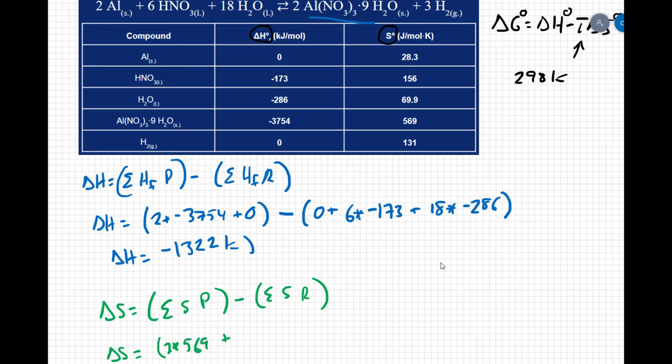Alright so those are my products minus my reactants so I have 2 aluminums 2 times 28.3 plus 6 hydrogen nitrates so 6 times 156 plus 18 waters so 18 times 69.9.